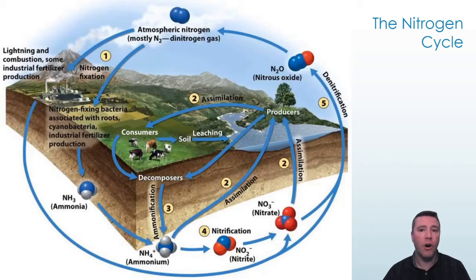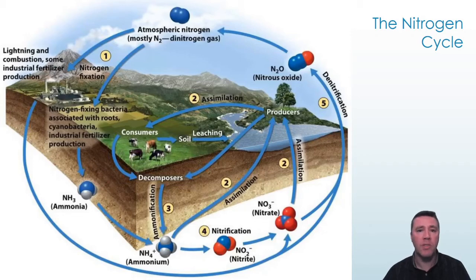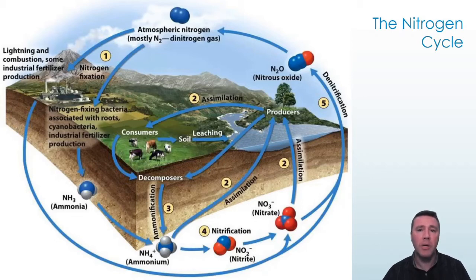Just like carbon, those nitrogen compounds can be used by the plants or passed on to animals if the plants are eaten. Humans have influenced the nitrogen cycle through the production of synthetic fertilizers, which contain nitrogen. The introduction of excess nitrogen into ecosystems has ecological consequences that will be explored in a later topic.